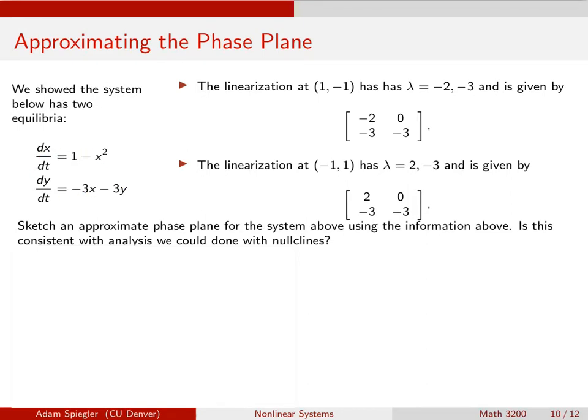What we've done so far is we've commented that it has two equilibria at (1, -1) and at (-1, 1). And we linearized the system at each of those equilibria to determine whether those equilibria are stable or not.